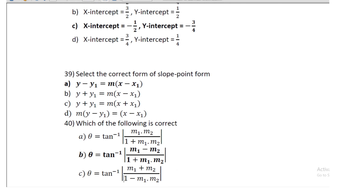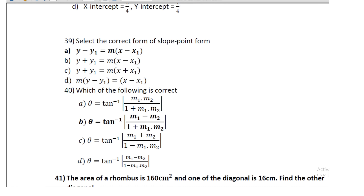Question 36: select the correct form of slope-point formula: y − y₁ = m(x − x₁). From the given four equations, the second equation is correct: θ = tan⁻¹((m₁ − m₂)/(1 + m₁m₂)).